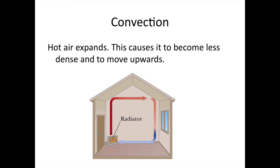Imagine this radiator down here — that's heating the air around it. As we heat air, it becomes less dense and expands. If the air is less dense than the surrounding cold air, then it will float to the top. So in a house, you've got the hot air floating to the top, hitting the roof where it's reflected off, and you get these convection currents generated.